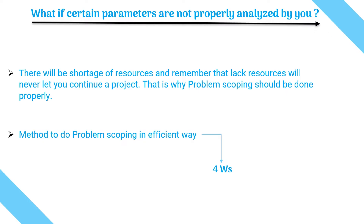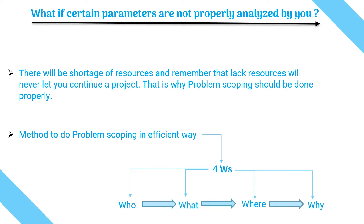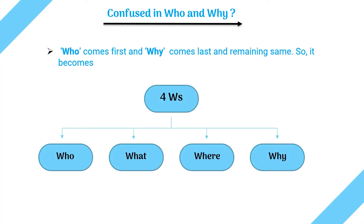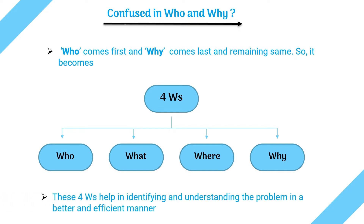We have a method to do problem scoping in a correct and efficient way — we call this the four W's of problem scoping, or the four W's canvas. These four W's stand for: who, what, where, and why. Here is a memory trick: if we arrange these four by word count and then alphabetically, 'o' comes before 'y', so 'who' comes first and 'why' goes last. The order is: who, what, where, and why. These four W's help in identifying and understanding the problem in a better and efficient manner.